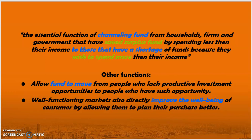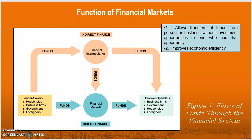A well-functioning financial market also directly improves the well-being of consumers by allowing them to plan their purchases better. This flow chart shows the flow of funds in the financial system. There are two routes that channel funds from one party to another — directly and indirectly. This flow chart describes how funds are transferred from a person or business without investment opportunities to one who has that opportunity, which can improve economic efficiency. You can refer to this flow chart in more detail in the flipbook provided.